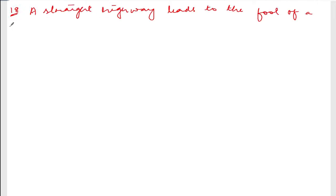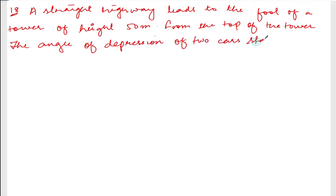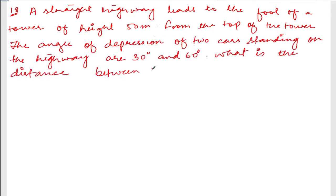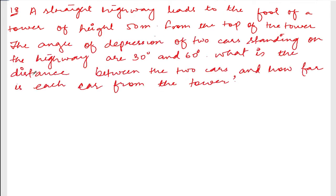Now we are doing exercise 10.4, question number 18. The question says: a straight highway leads to the foot of a tower of height 50 meters. From the top of the tower, the angle of depression of two cars standing on the highway are 30 and 60 degrees. What is the distance between the two cars and how far is each car from the tower?